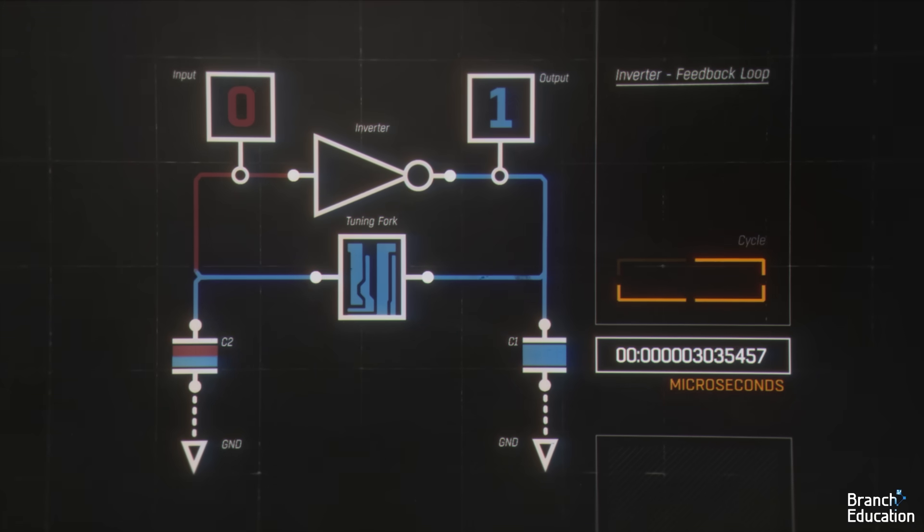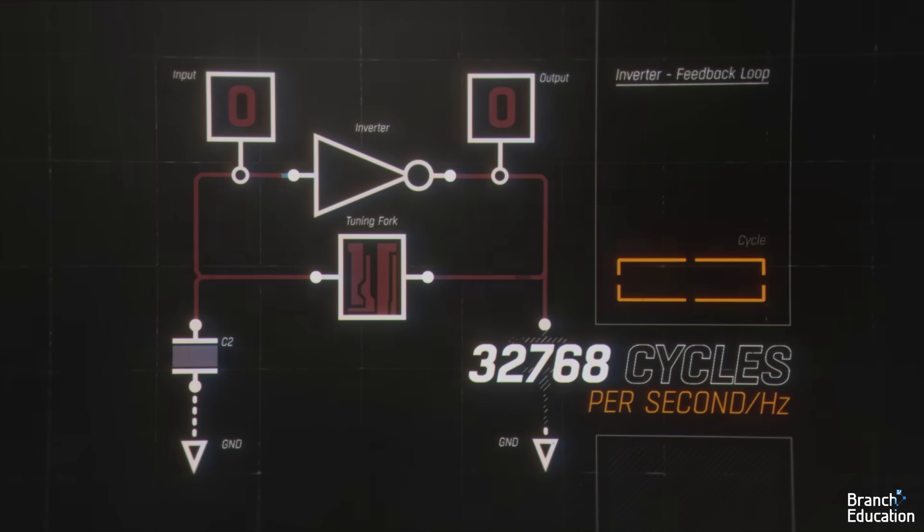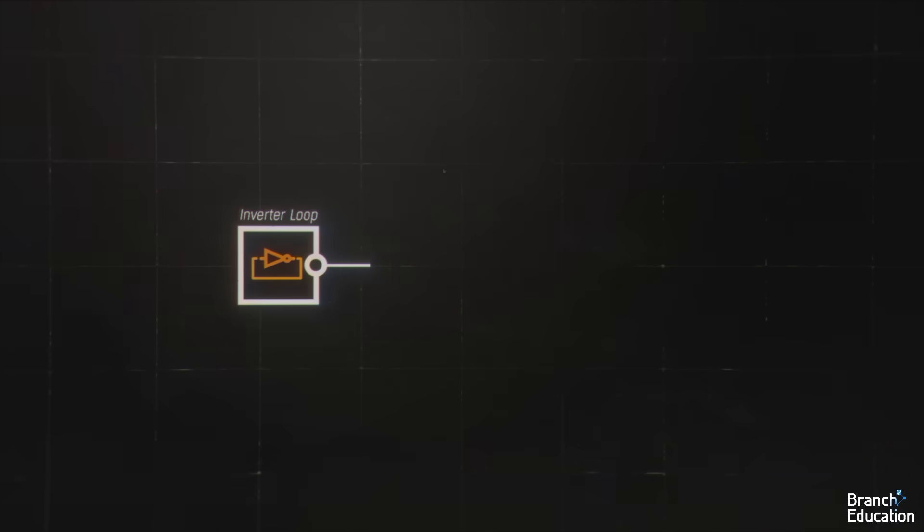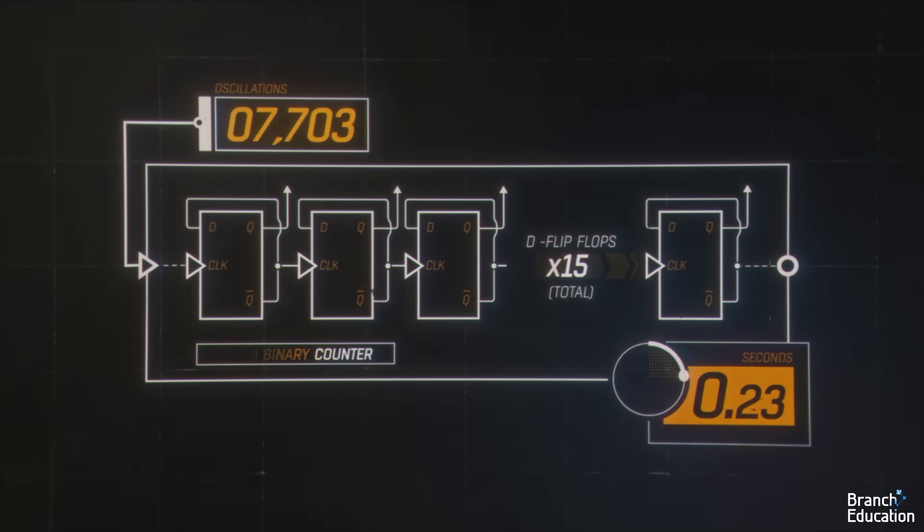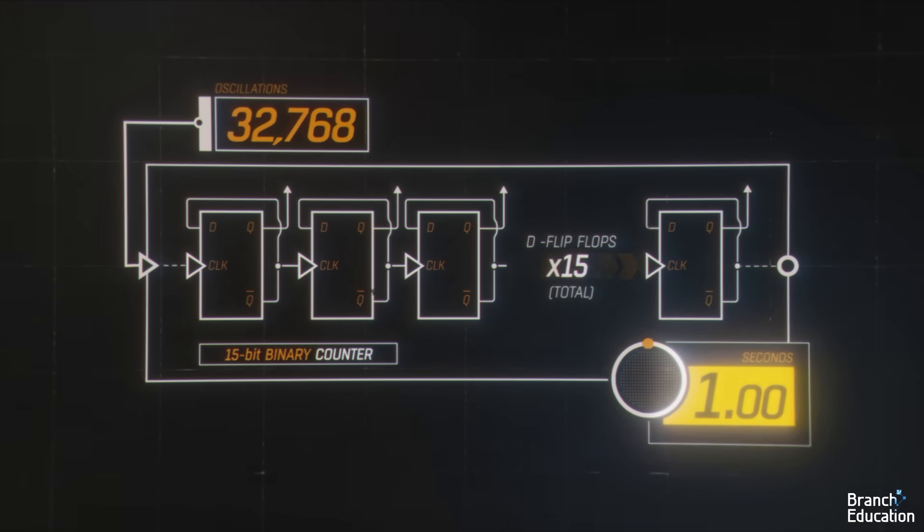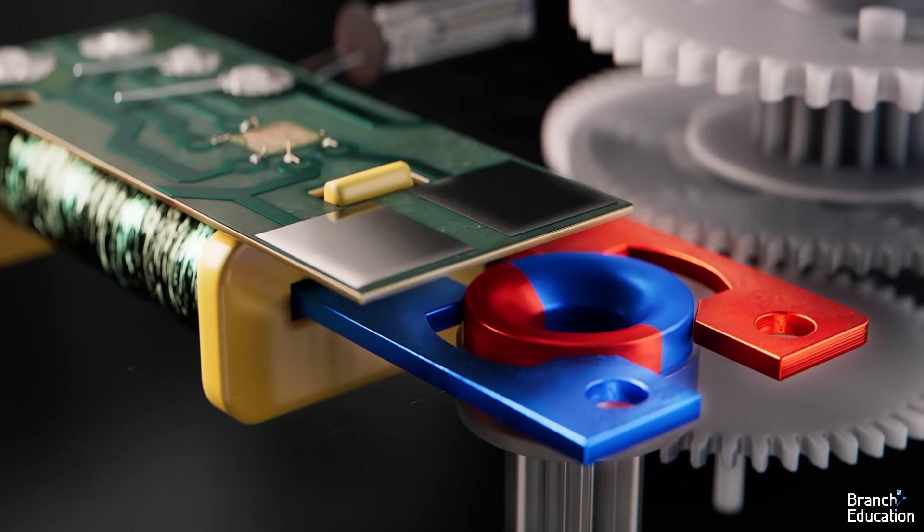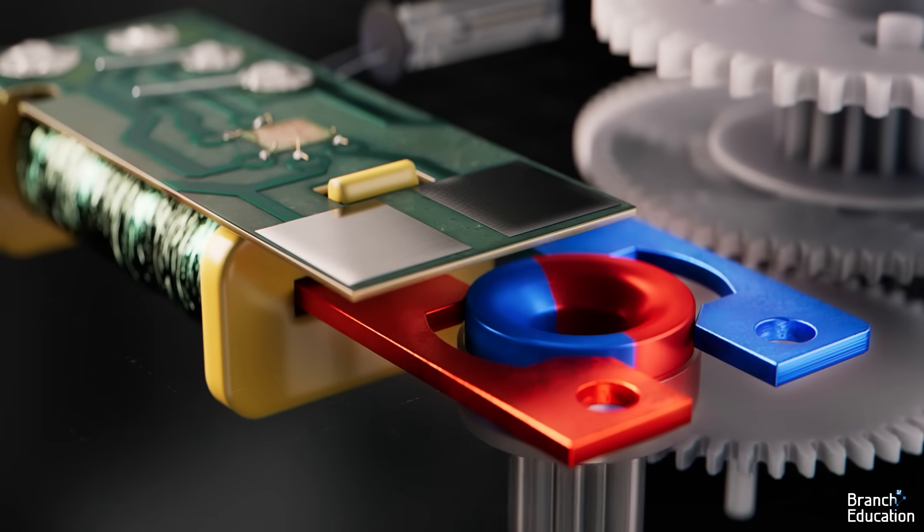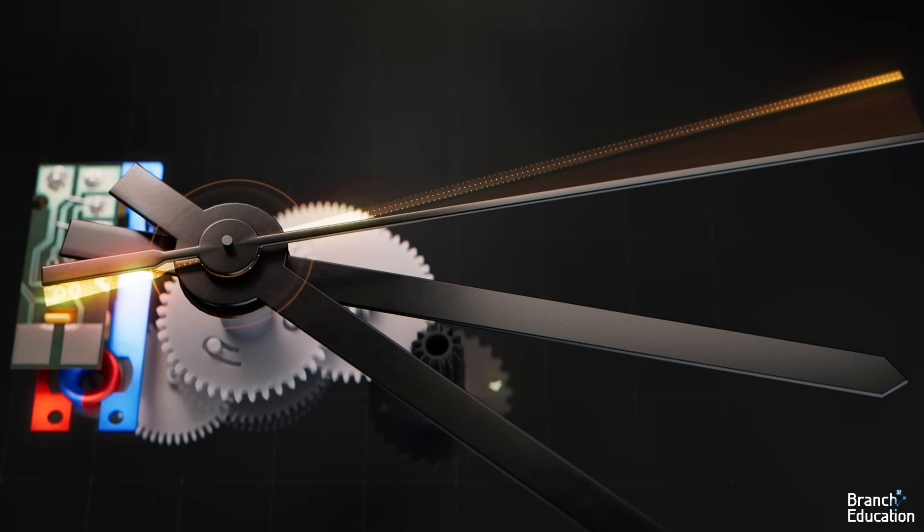For this wall clock, the time it takes is 30.52 microseconds per cycle, resulting in 32,768 cycles per second. The signal is then fed to another section in the integrated circuit, where a binary counter counts each cycle. And after 32,768 cycles, which takes one second, the signal is sent to the electromagnetic controller telling it to flip the direction of the electromagnet, thereby rotating the driver gear around 180 degrees and moving the hands of the clock forward by one second.